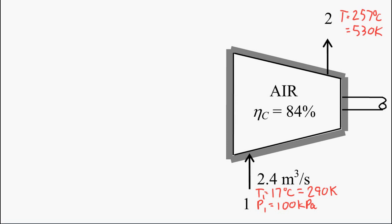Using table A17 from the book, we get that the enthalpy at the inlet is equal to 290.16 kJ per kg. We also get that the relative pressure is equal to 1.2311.